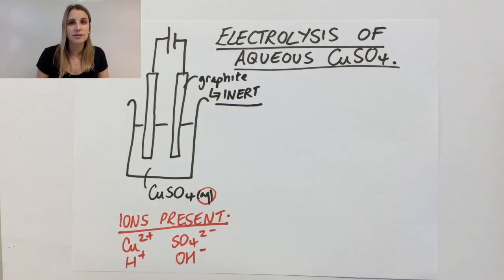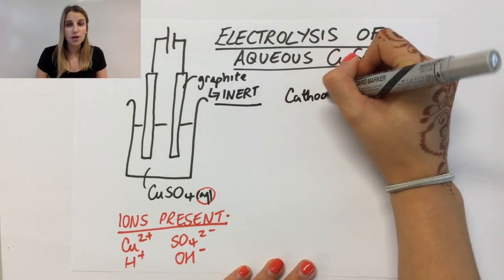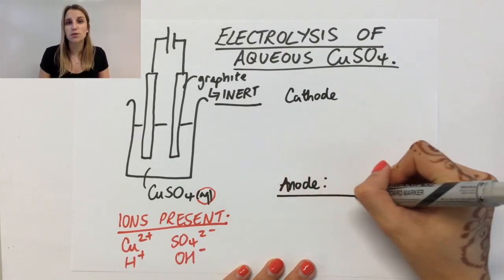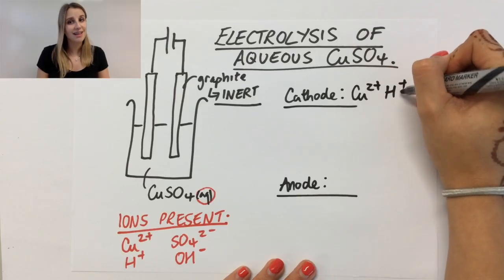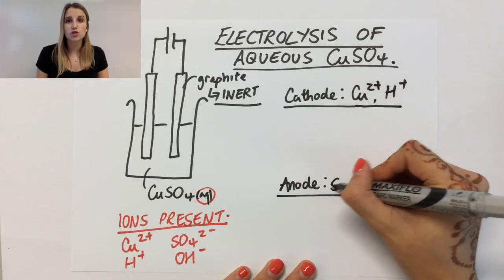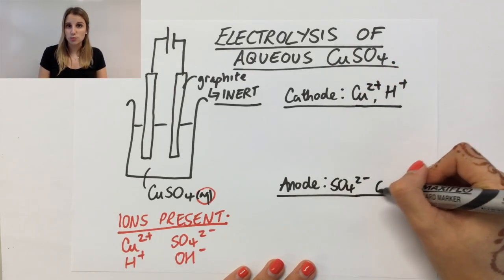Let's have a look at what happens at the cathode. At the cathode here, I've got two possibilities because both the Cu2+ and the H+ will be attracted there. At the anode, the SO4 2- and the OH- would be attracted there.